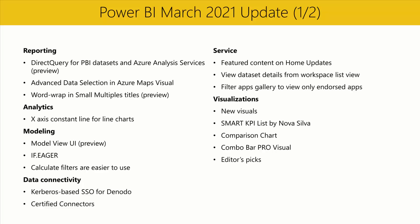In the visualizations section, we have some exciting new and updated visuals. New this month is the Multi-Card KPIs visual by TME AG. Updated this month are the Smart KPI List by Nova Silva, the Comparison Chart by Mogula, and the Combo Bar Pro visual by Zoom Charts. More information on all of these can be found on our blog. This month's Editor's Picks are the Ratings visual by Mac Software, the Comic Gen visual by Gramina, and the Smart KPI List by Nova Silva. You can find these and all other mentioned visuals on AppSource.